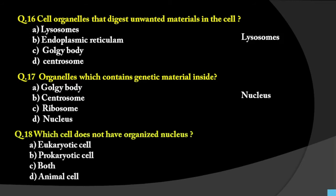Question number 18: Which cell does not have an organized nucleus? Options are eukaryote, prokaryote, both, or animal cells. The answer is prokaryote because 'pro' means primitive. In prokaryotes, the nucleus is not properly organized because nuclear membrane is not present in them.